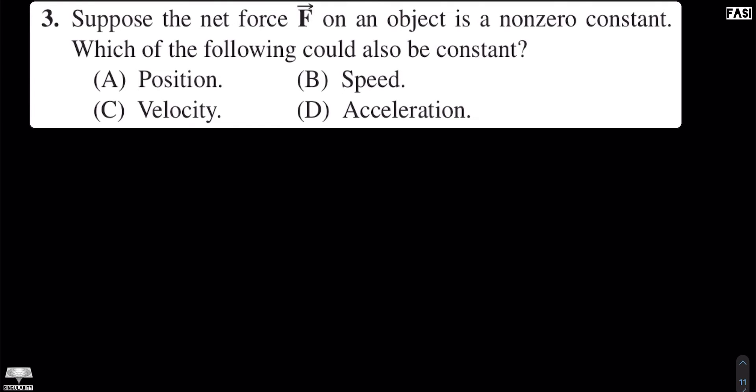This is multiple choice question 3 of chapter 4 of the book by Halliday, Resnick and Krane. The statement of this problem is: suppose the net force F on an object is a non-zero constant, which of the following could also be constant? We have to ask, if the object has a net force that is non-zero and constant, which of the quantities - position, speed, velocity, and acceleration - would be constant?